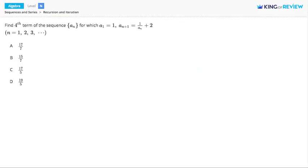Hi, this is King of Review. Here we need the fourth term of a sequence, where we know the first term is 1, and every term after that is 1 divided by the previous term plus 2.